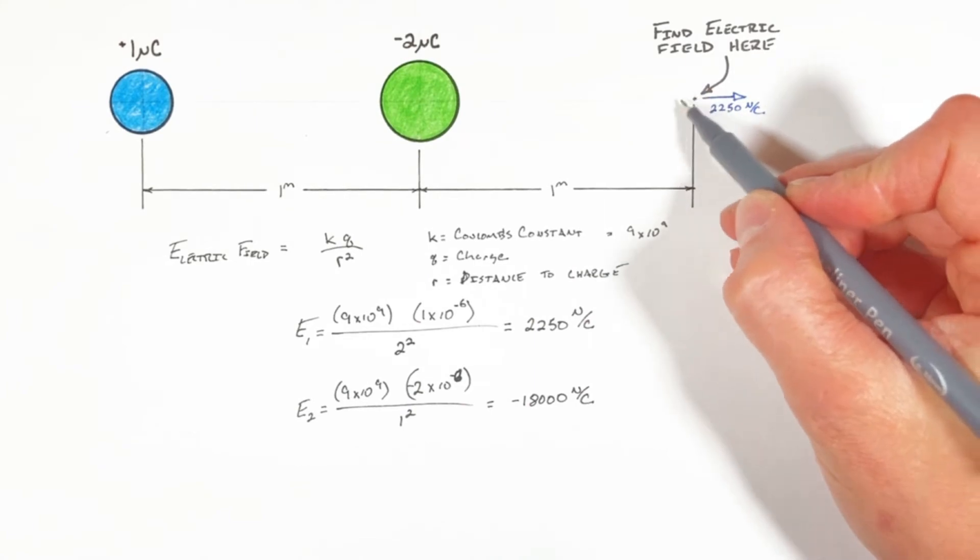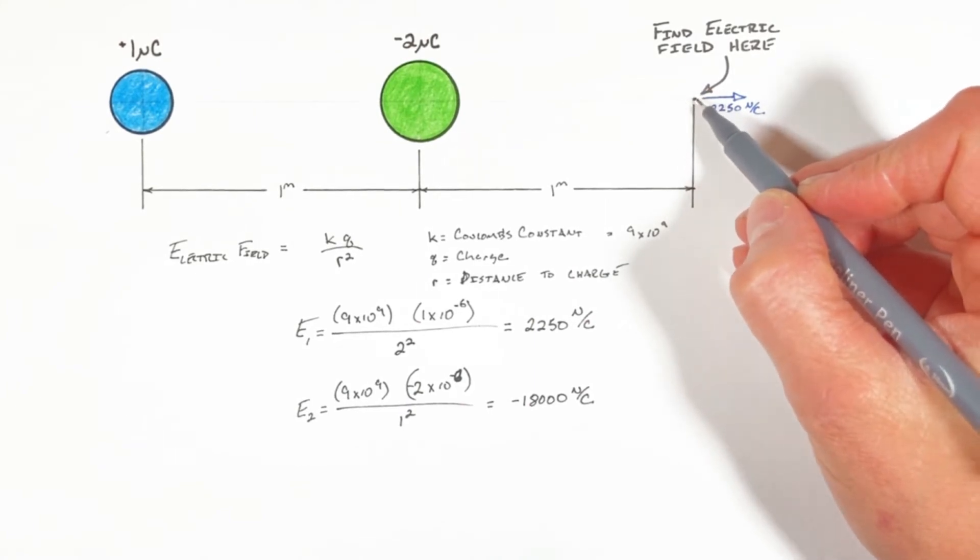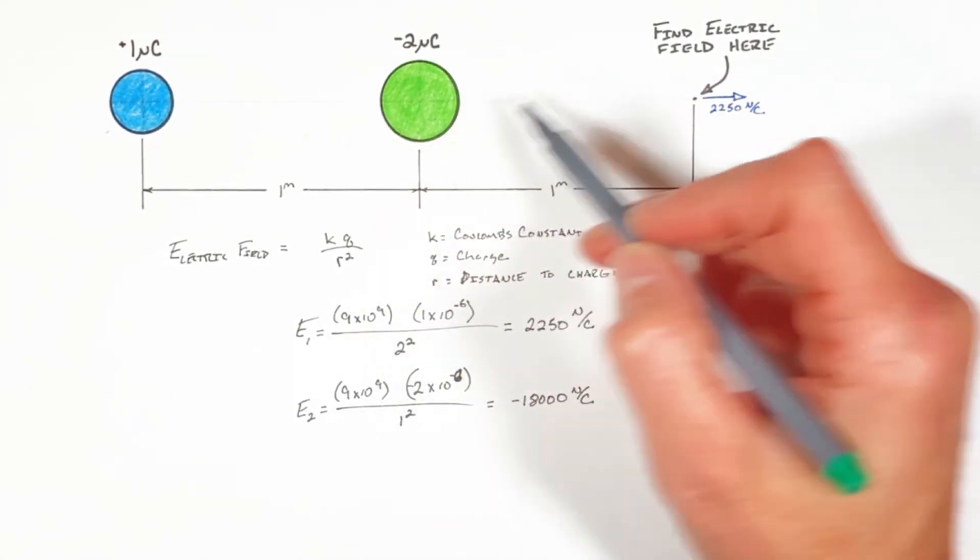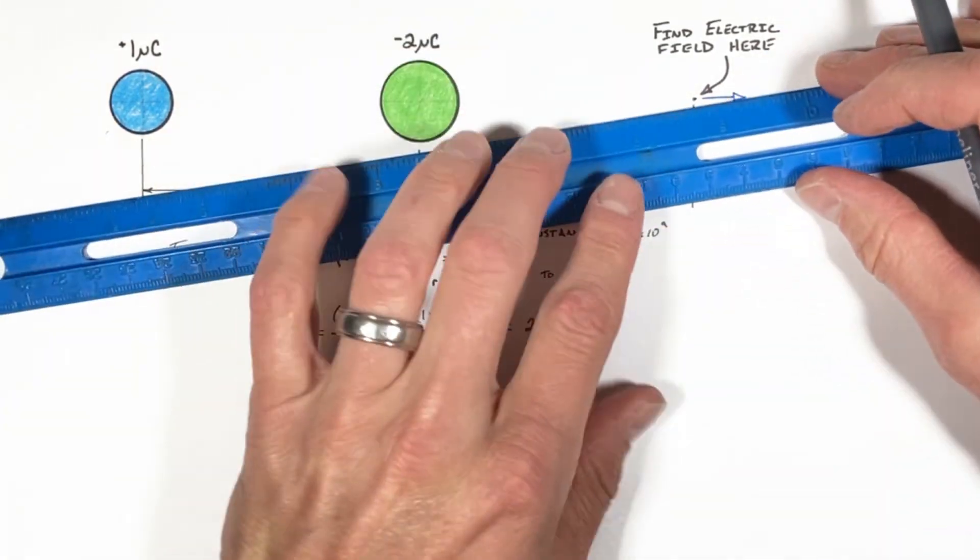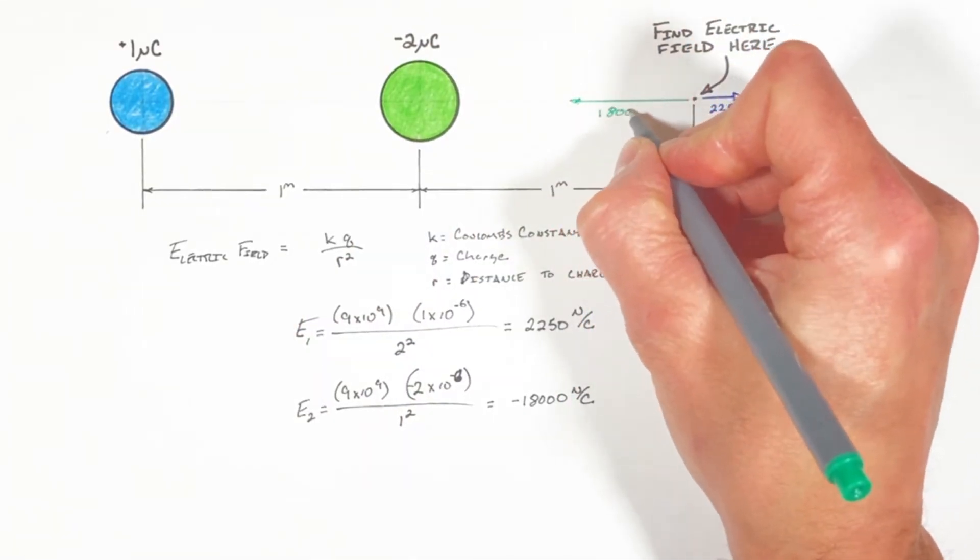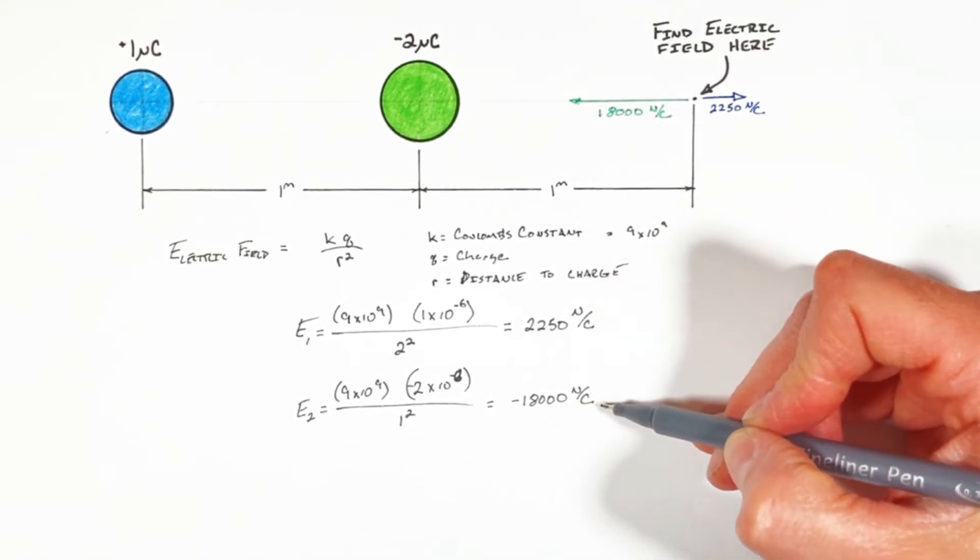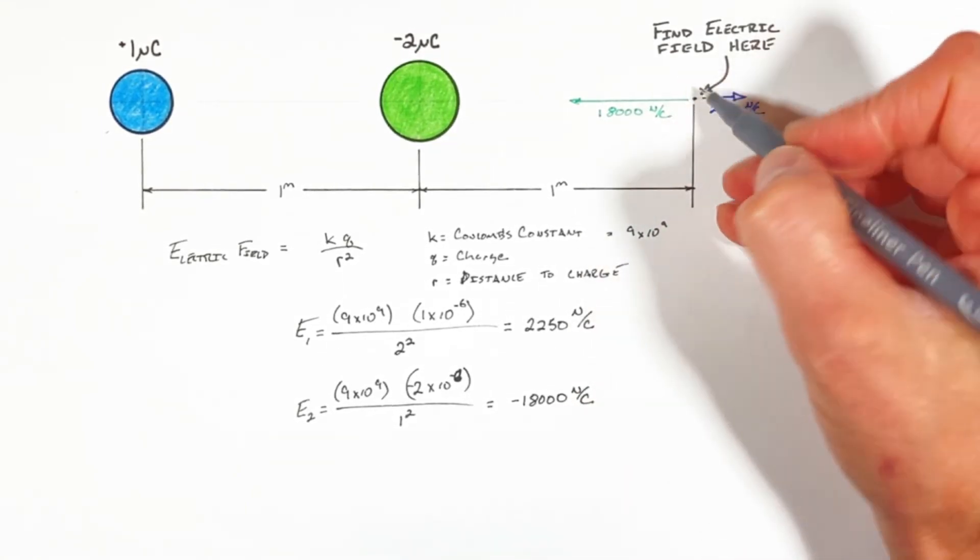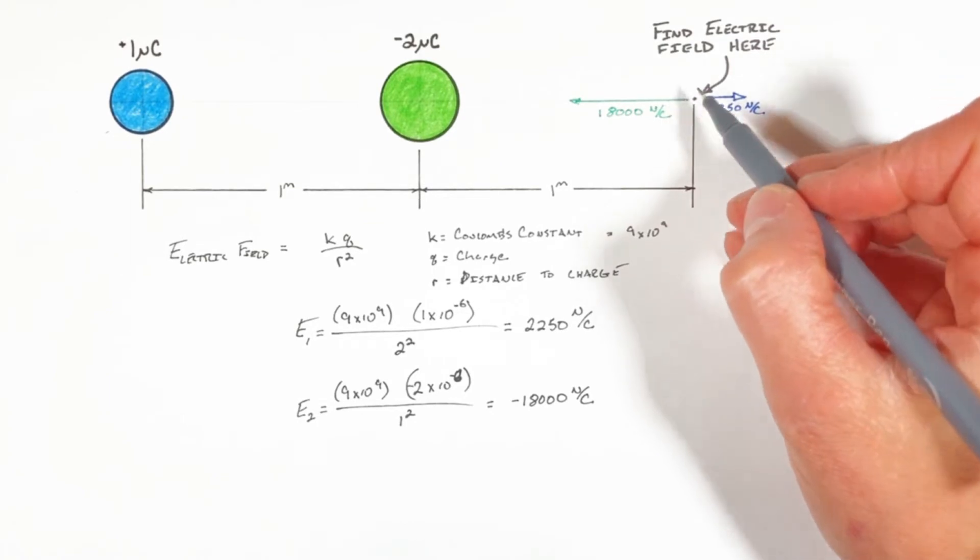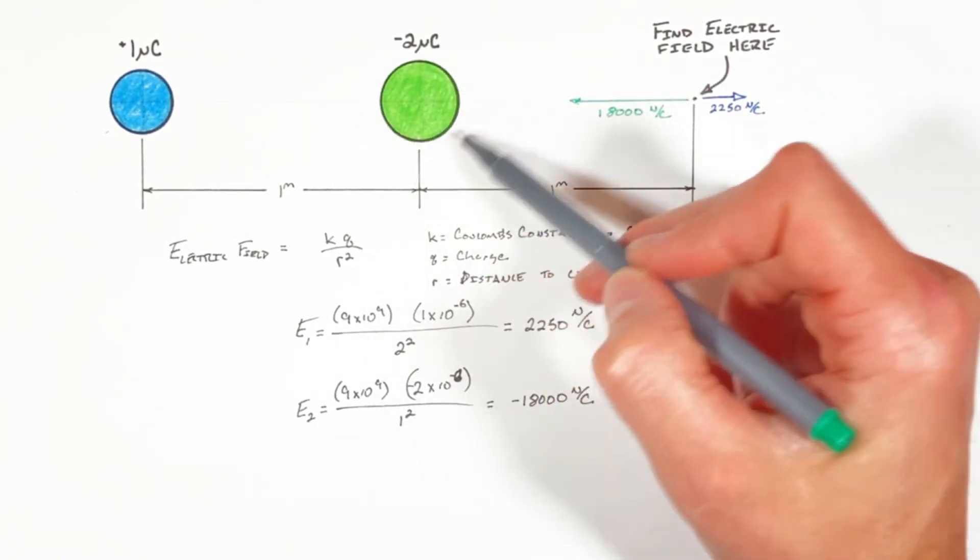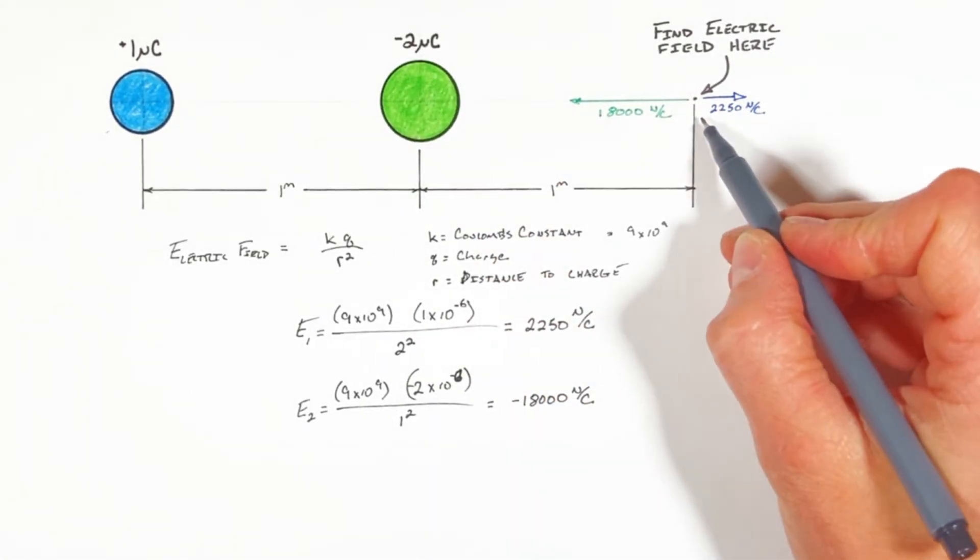Over here, now if we were to place a positive test charge right here, the electric field from this charge would be acting to the left. And it would be acting to the left not because this value right here is negative, rather it'd be acting to the left because a positive charge would be attracted to this negative charge over here. So ultimately our total electric field is simply going to be the sum of these two competing electric fields.